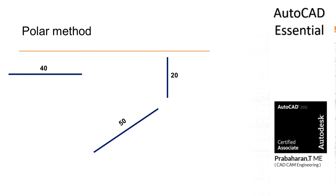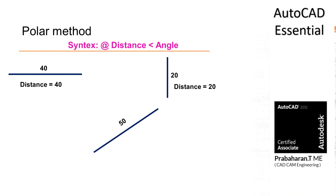We have a horizontal line. We know the distance of the line is 40 mm. What will be the angle of this line? We can draw a line from left to right or right to left. Similarly, we have a vertical line of 20 mm. What is the angle of that particular line? We can draw from top to bottom or bottom to top.